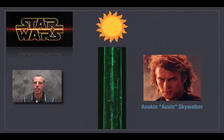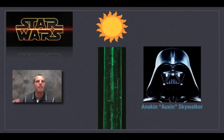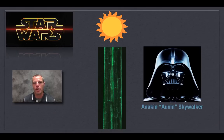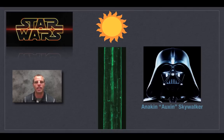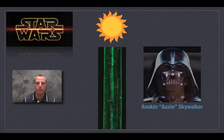Anakin started to give in to evil thoughts and became one of the greatest sci-fi villains: Darth Vader. I use this example because auxin, the hormone, is going to choose the dark side of the plant when it comes to movement, which helps bend the plant towards the light.